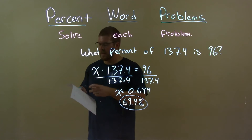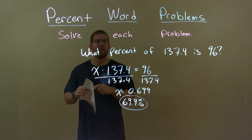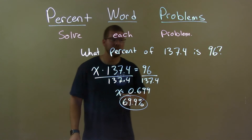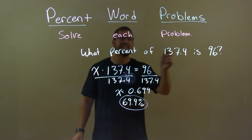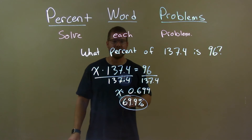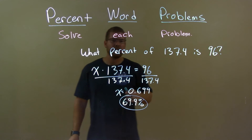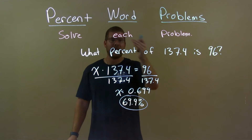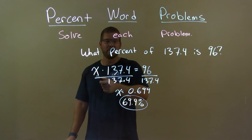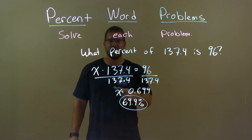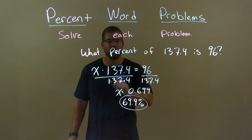So, quick recap. We're given the question: what percent of 137.4 is 96? What I want to do is write that as an equation. So, I did x times 137.4 equals 96, solve for x, and got it.